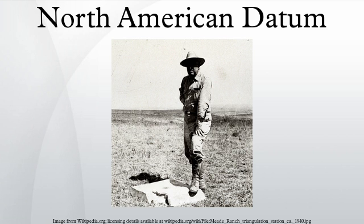Clark actually defined his 1866 spheroid as a = 20,926,062 British feet, b = 20,855,121 British feet. The conversion to meters uses Clark's 1865 inch-to-meter ratio of 39.370432. Most USGS topographic maps were published in NAD27, and many major projects by the United States Army Corps of Engineers and other agencies were defined in NAD27, so the datum remains important despite more refined datums being available.